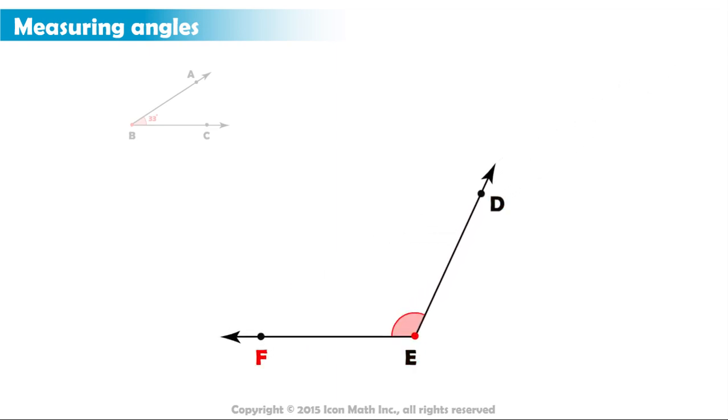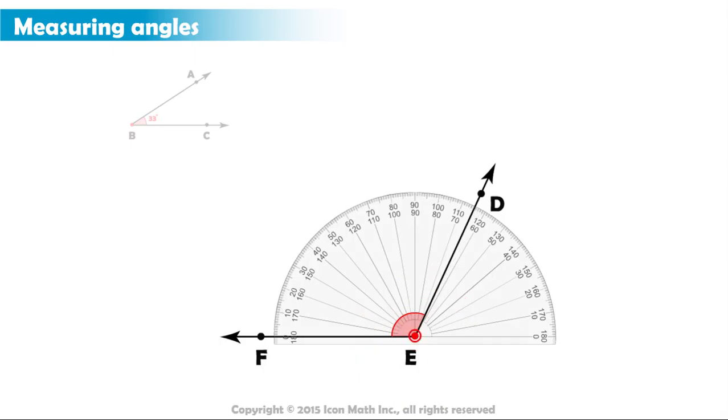The angle DEF is large. It seems to be bigger than a right angle. So, here, we align it, and we start counting from this side. 10, 20, 30, until we get to 100, 110. Then, we count 5 more small parts to get to 115 degrees.